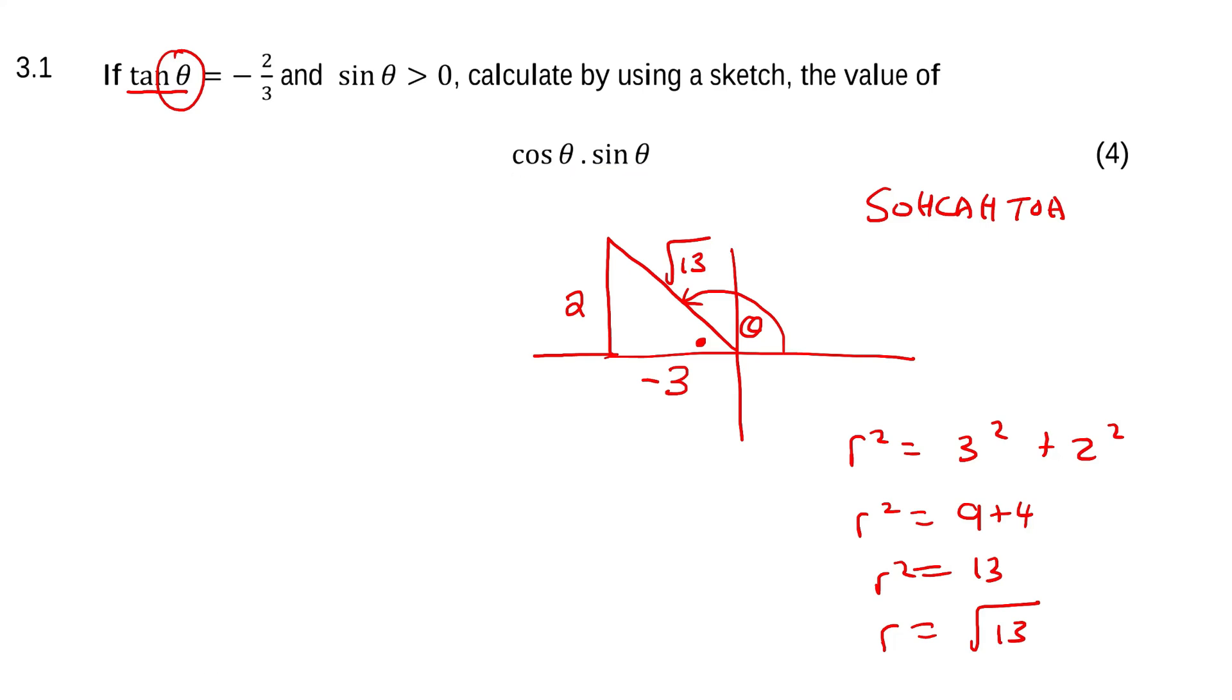What is cos θ? Cos is adjacent over hypotenuse. And then we multiply that by sin θ, which is the opposite over the hypotenuse.